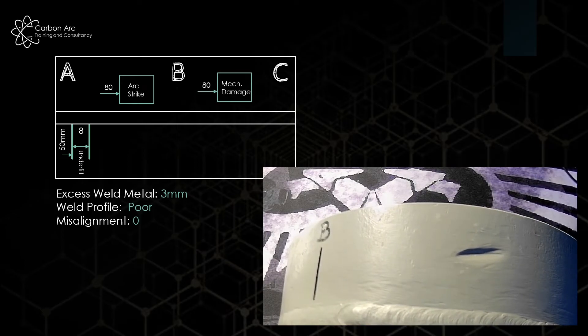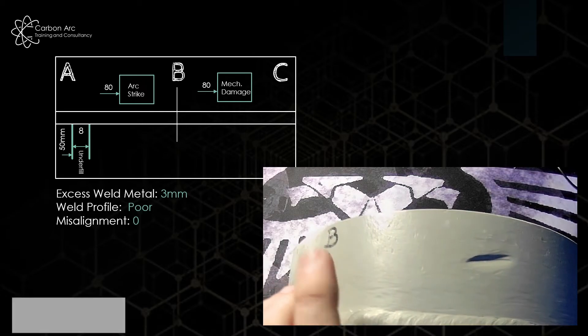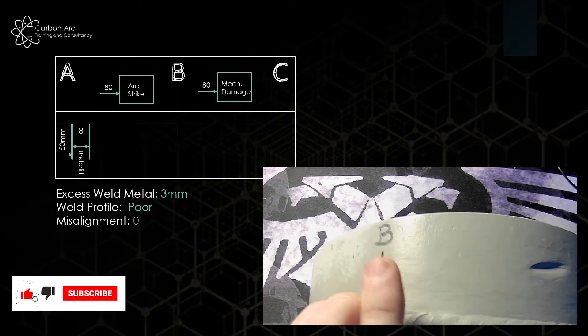So we'll do that, again, by writing our mechanical damage in a box and taking the datum. We said this is 80mm away from the B datum now, because now we're going B to C.